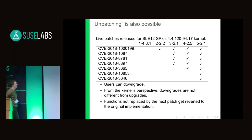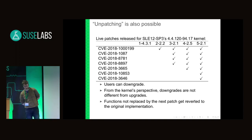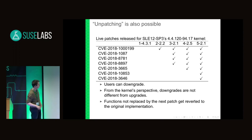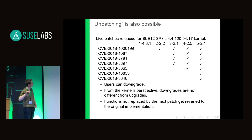Apart from live-patch applications, the reverse direction — downgrading — is also possible. Looking at some live-patches for a random SLES 12 SP3 kernel we released, each successive one includes more CVE fixes than the one before. The point is that users are allowed to downgrade, meaning code that had previously been live-patched becomes un-live-patched.